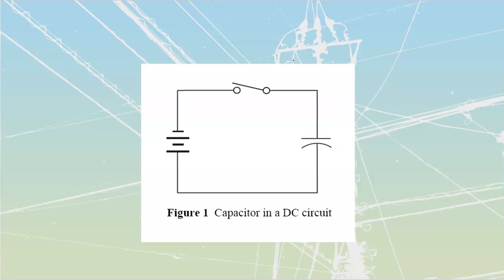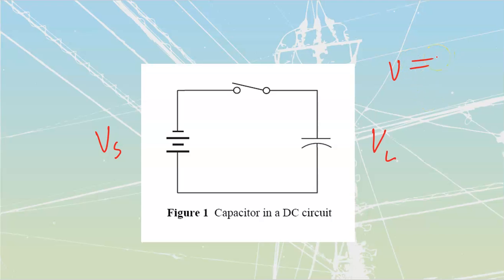We know we have to satisfy our laws — Kirchhoff's law of voltage and Kirchhoff's law of current. KCL means all the current into the circuit has to come back out to the battery. KVL means that whatever we have for our source voltage has to be dropped across our load. Our only component here is the capacitor, so if we close this circuit, we'd have to drop all that voltage across it instantly — charging up to full source voltage — satisfying V = Q/C.